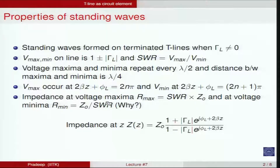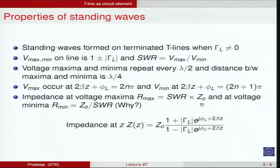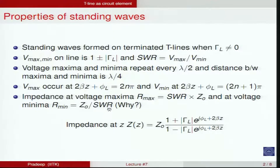At the voltage maxima, the voltage is V0+ times (1 + |gamma_L|) and the current is V0+/Z0 times (1 - |gamma_L|). The ratio gives impedance at the voltage maxima as SWR × Z0, which is real. At the voltage minima, the impedance is real and equals Z0/SWR, assuming Z0 is real.